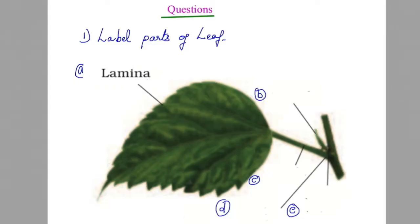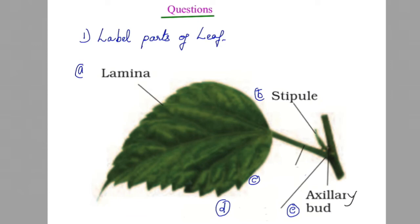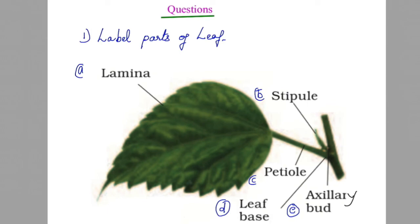Identifying leaf parts: A is the lamina. B — two lateral appendages on the leaf base — these are called stipules. In the axil of the leaf there is an axillary bud. The stalk of the leaf is called the petiole. Where the leaf is attached to the stem is called the leaf base. So the parts are: lamina, stipules, petiole, leaf base, and axillary bud.